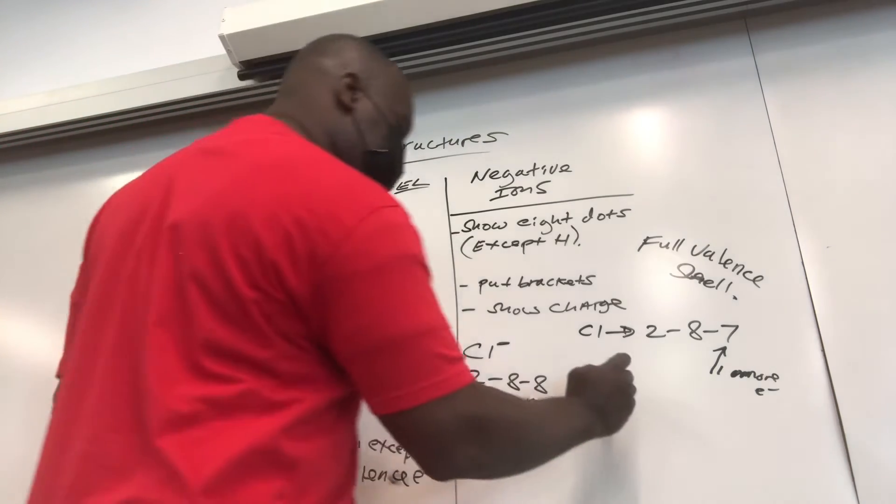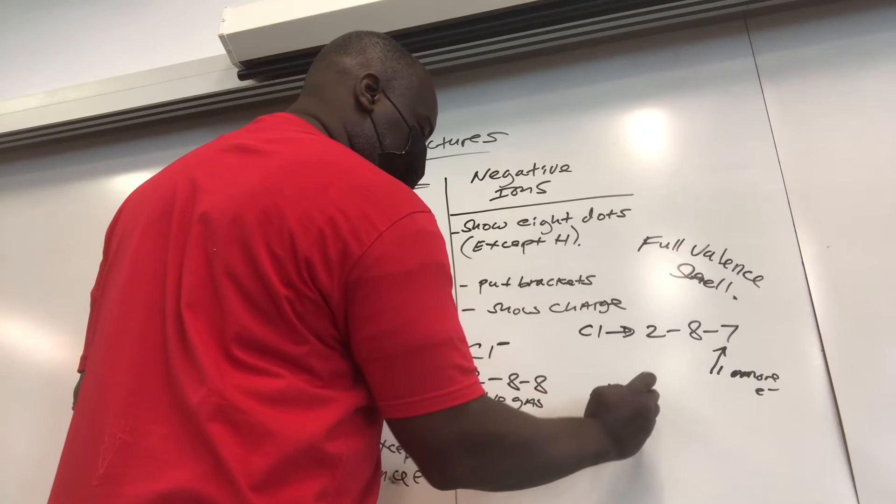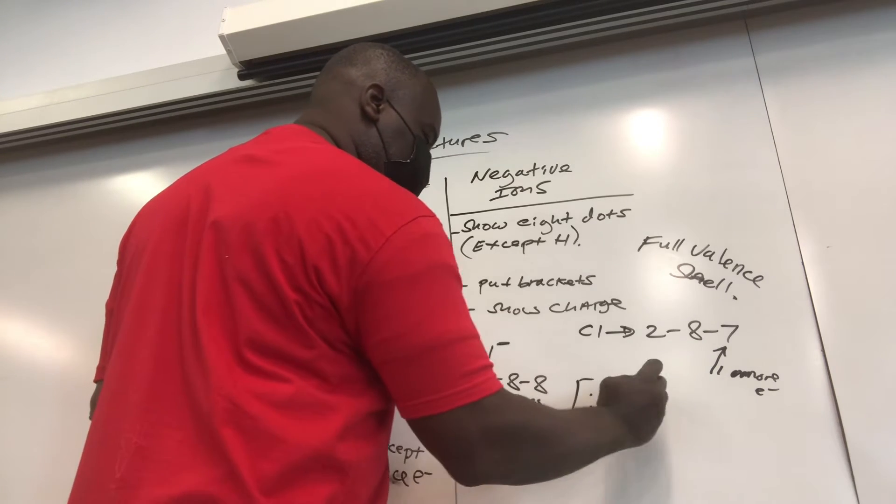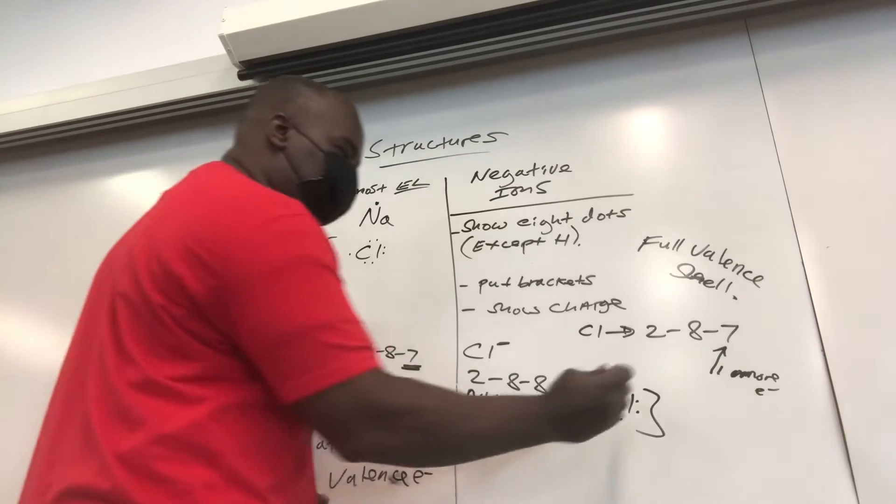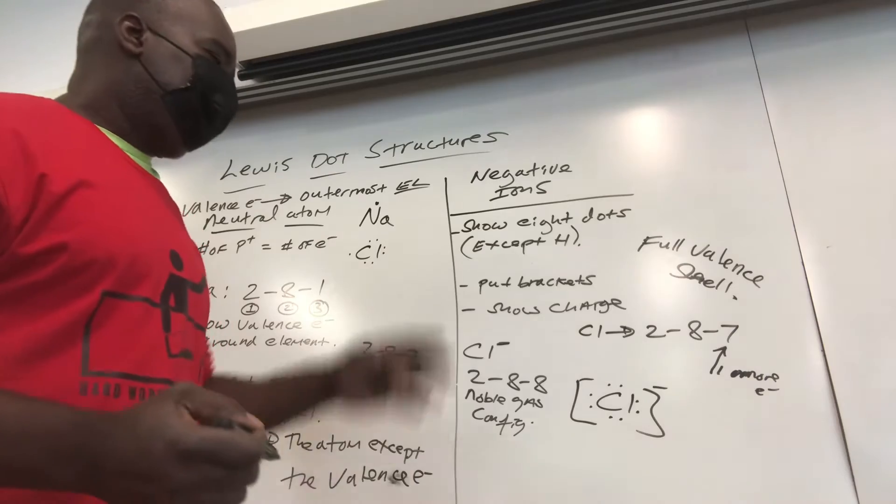So 2-8-8 is the electron configuration of the chloride Cl minus ion. Now how do you do the dot structure? You're going to show eight dots. So you put Cl, you put eight dots around it. Put your brackets, and don't forget the charge. The charge is negative one. And you're done.